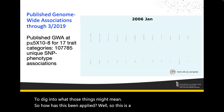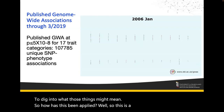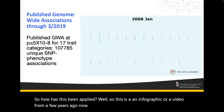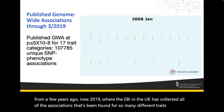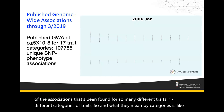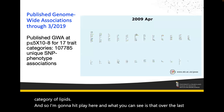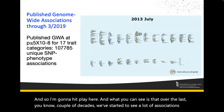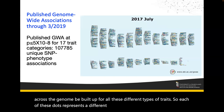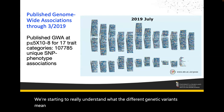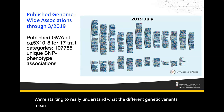How has this been applied broadly? The EBI in the UK has collected all associations found for many different traits — 17 different categories, where for example LDL and HDL are separate traits but both in the lipids category. Over the last couple of decades, we've started to see a massive outpouring of associations across the genome for all these different trait types. Each dot represents a different study that has found an association, and we're really starting to understand what different genetic variants mean and what they're associated with.